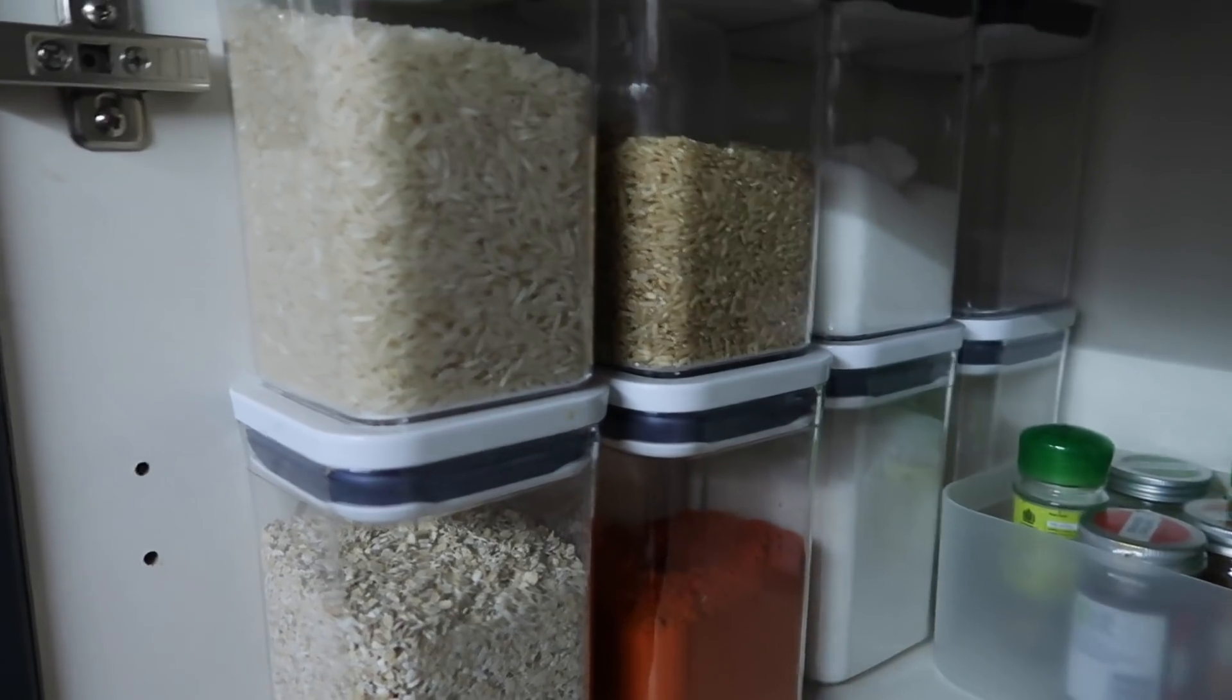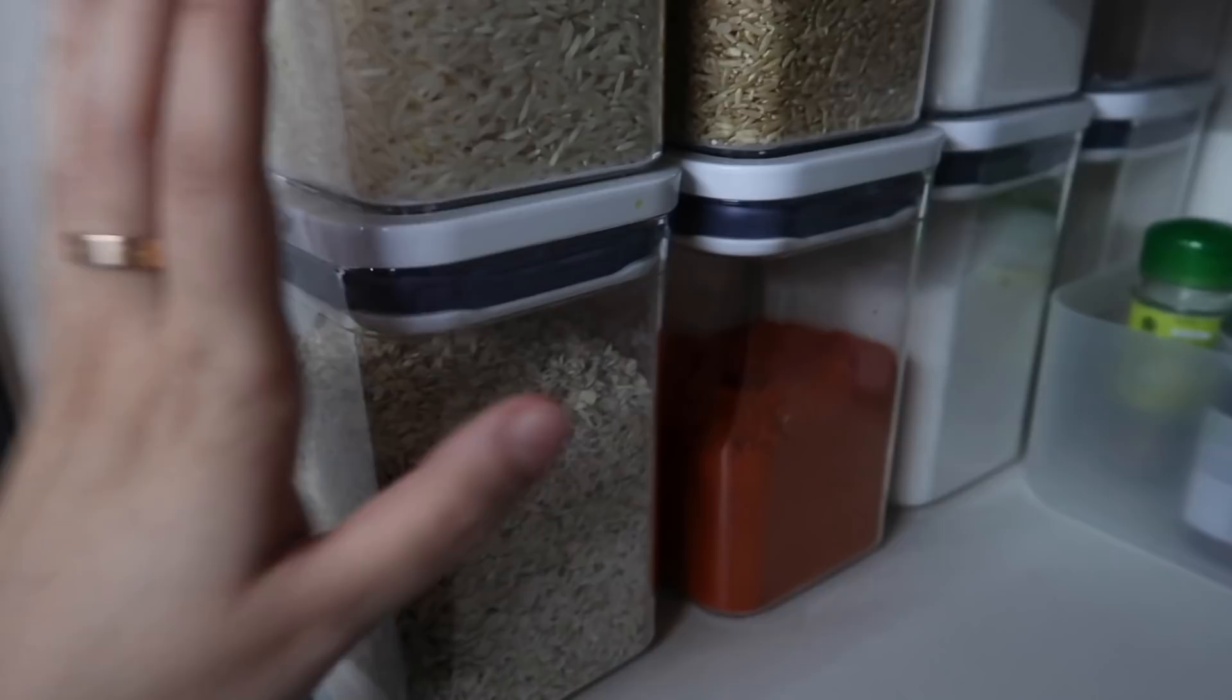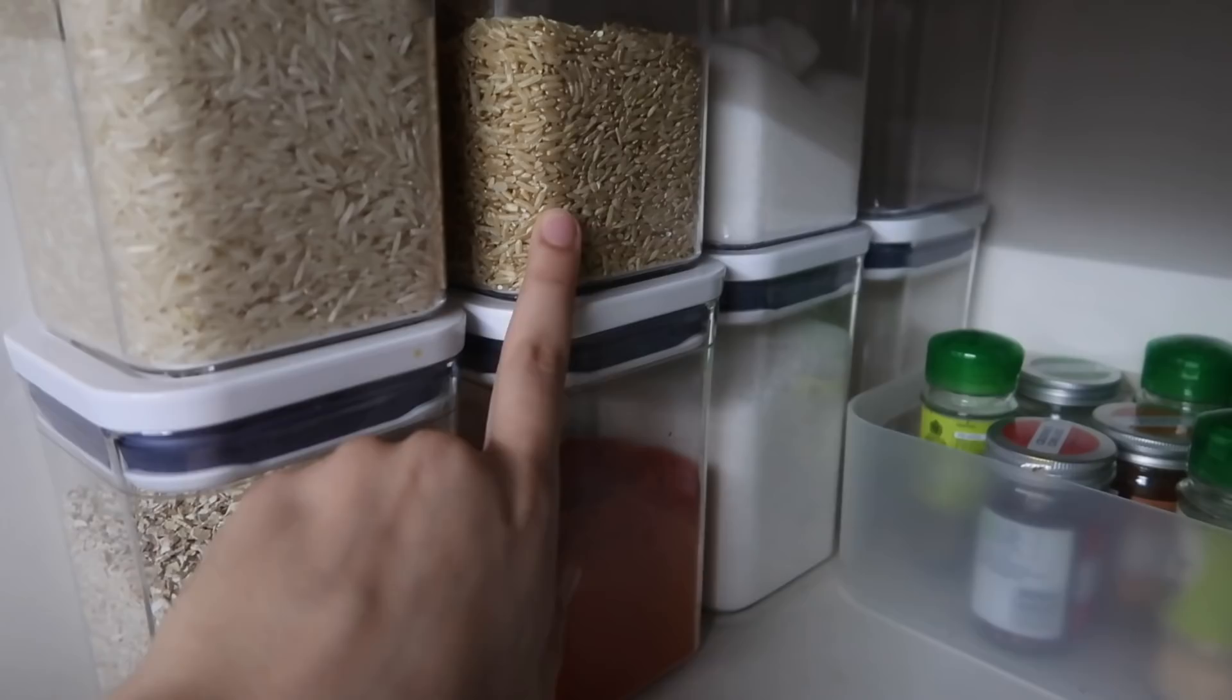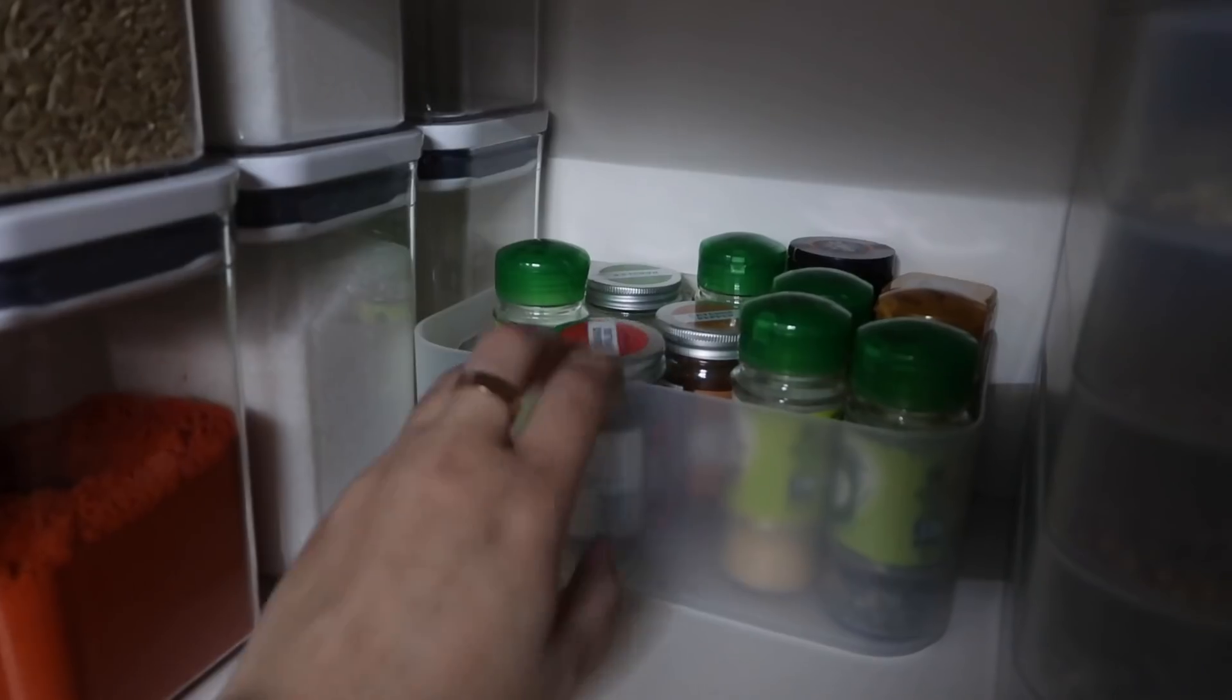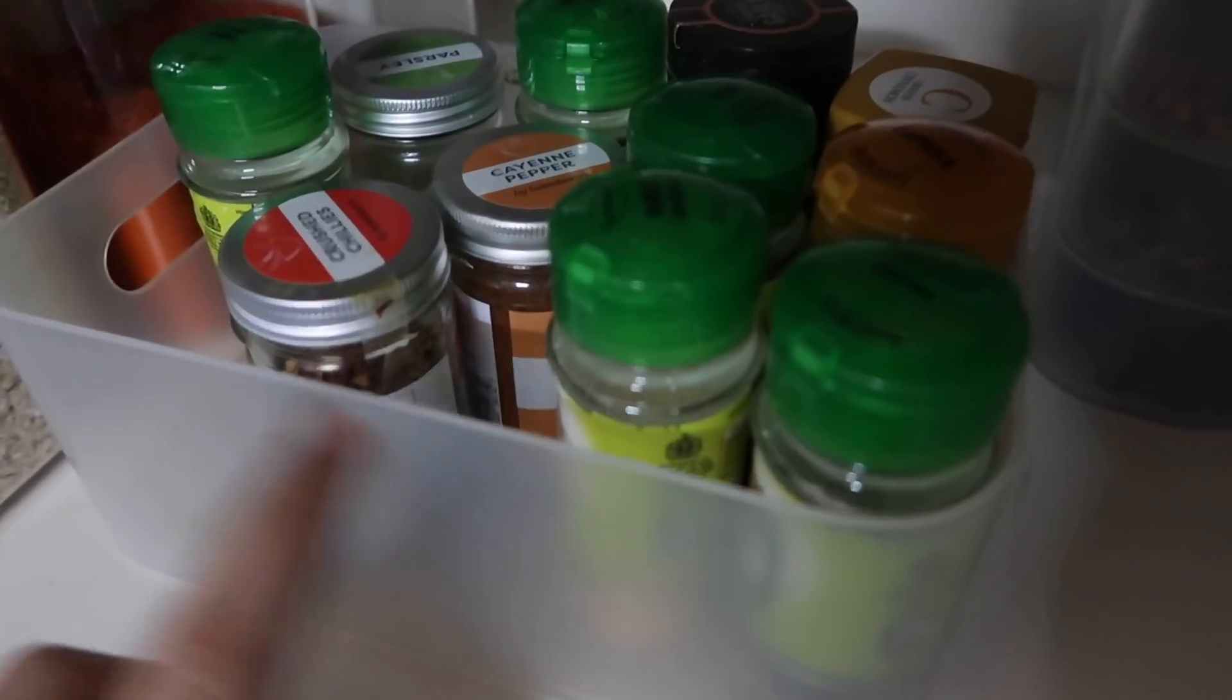On this side I keep all the stuff that are like just dry powdery bits I guess. So there's like rice, there's also oats here. So these two are the ones I use the most so it's in front. There's sugar just to top up in case, brown rice and chili powder.